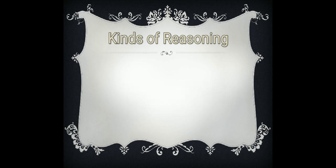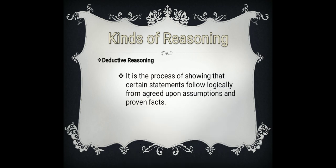The last type of reasoning is deductive reasoning. Deductive reasoning is the opposite of inductive reasoning — from a general conclusion going to a specific one, meaning you get specific information from a general conclusion. It is the process of showing that certain statements follow logically from agreed-upon assumptions and proven facts. So whereas in inductive reasoning we start from specific and generalize, in deductive reasoning we start from a general or assumed-to-be-true fact and derive specific information.